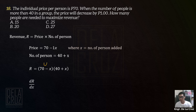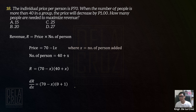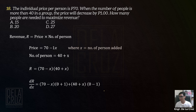Set that one as U, ito naman yung V. So U·dV: U is 70 minus X. dV — derivative of 40 plus X. Derivative of 40 is 0, derivative of X is 1. Plus V·dU: V is 40 plus X. dU — derivative of 70 which is constant is 0, derivative of negative X is negative 1.